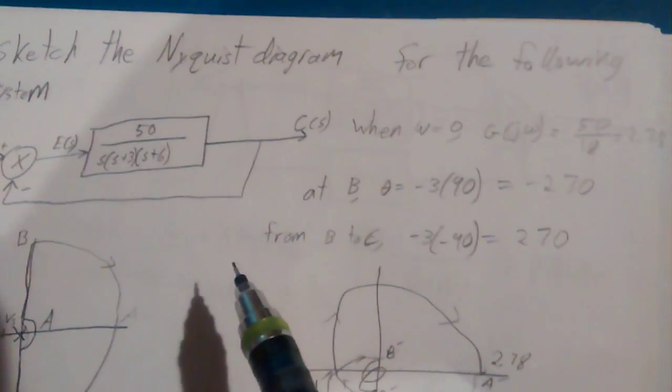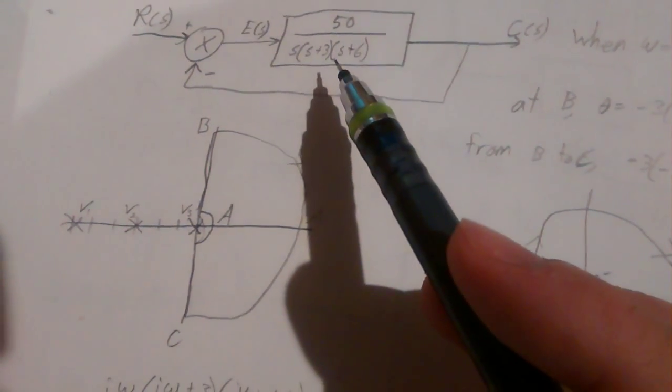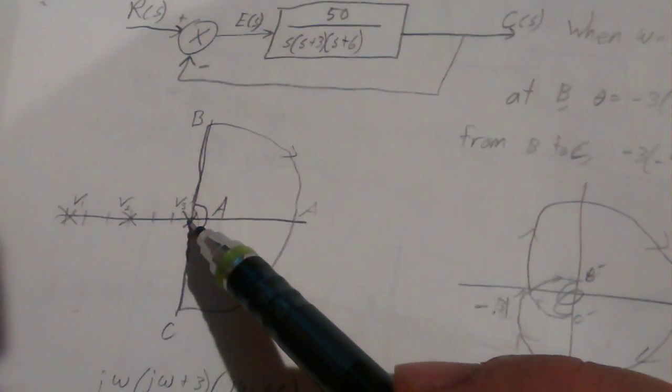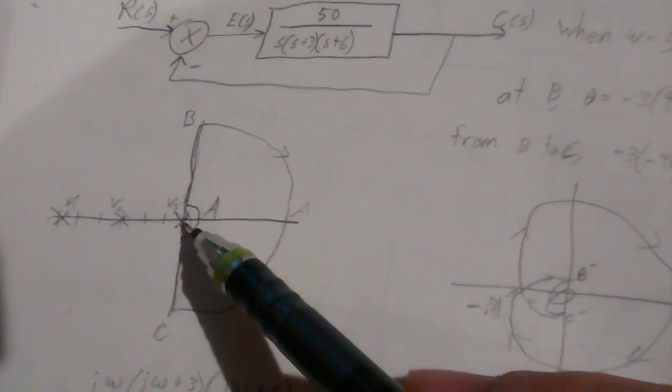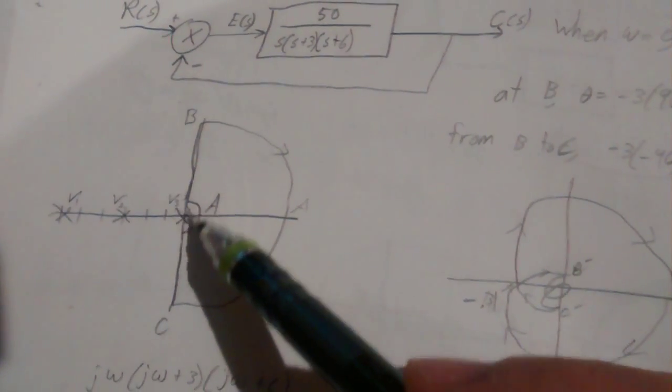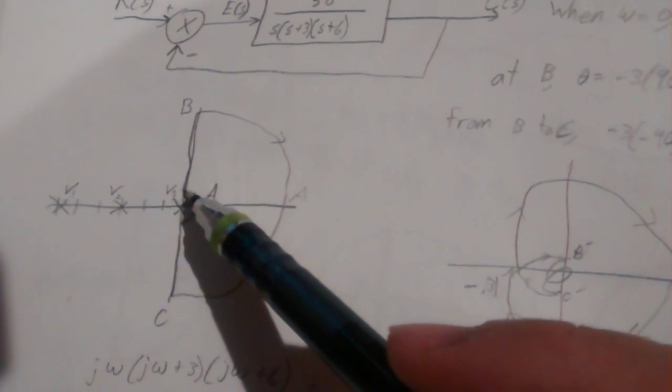Before we plot the Nyquist plot, we want to plot this. We have three poles and no zeros: a pole at 0, minus 3, and minus 6. We're going to follow this line to plot the Nyquist plot.